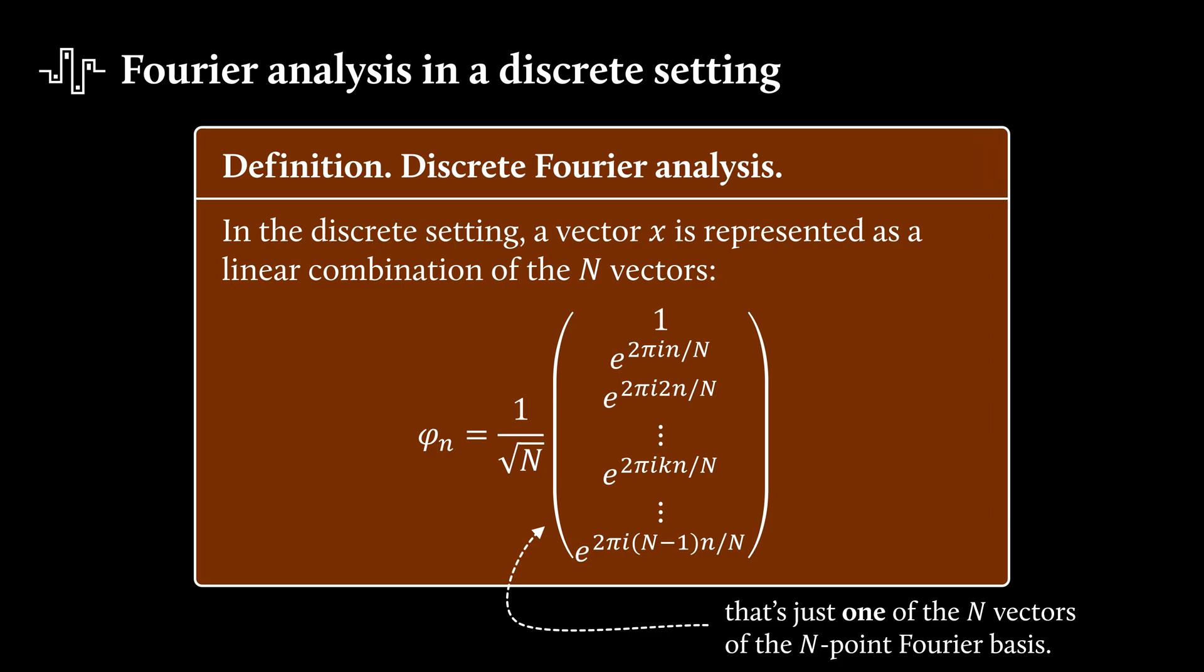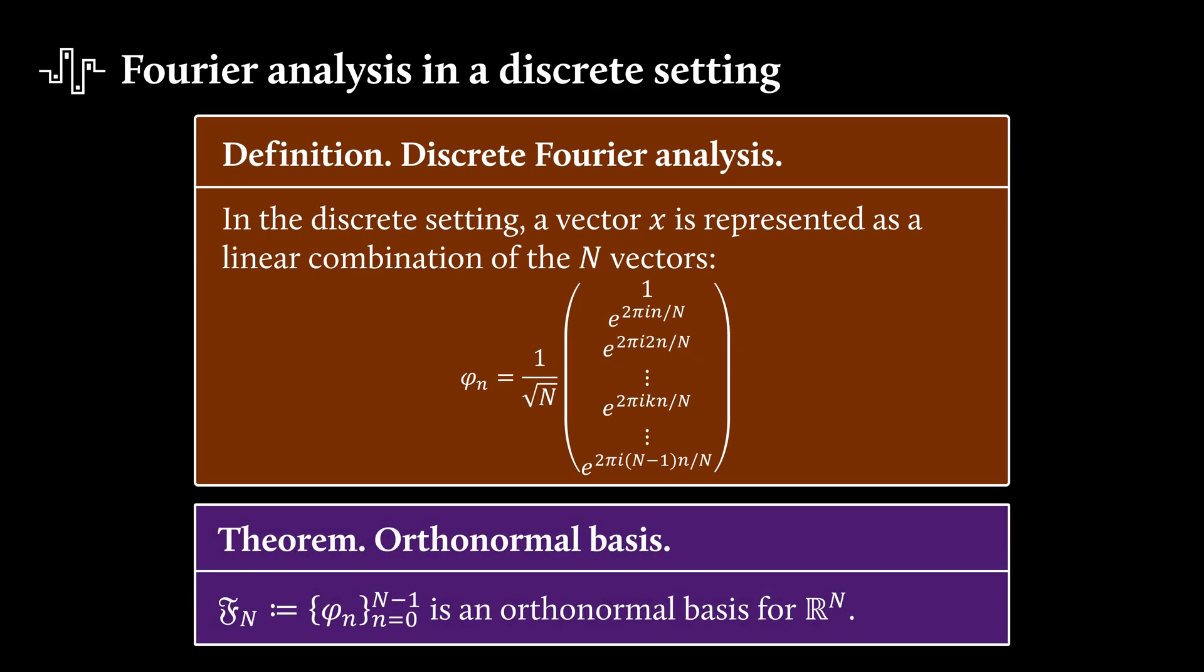In this discrete setting, a vector x is represented as a linear combination of the n Fourier basis vectors. So we sampled n times, we have n measurements now. If you've recorded a signal for two seconds with a sample rate of 44 kHz, then you have 88,000 points measured. And that means that your Fourier basis consists of 88,000 vectors that look like this here. And what you see here is just one of these n vectors, where every vector is only different with regards to the small n.